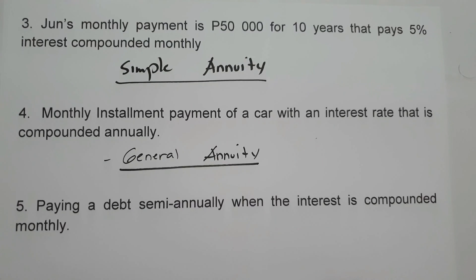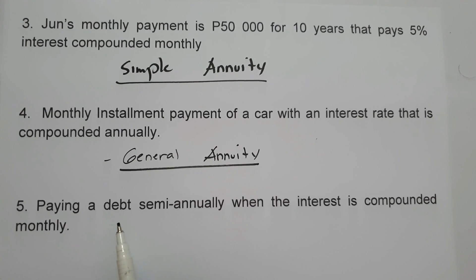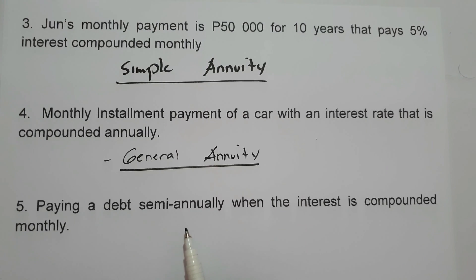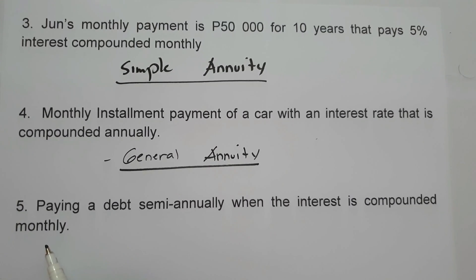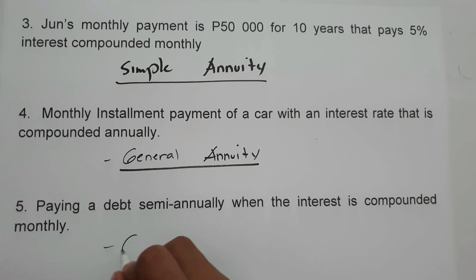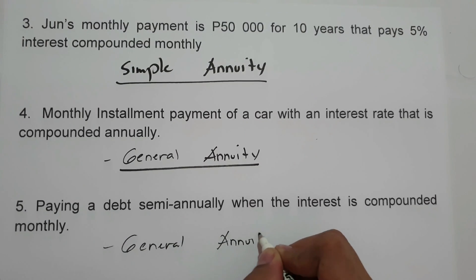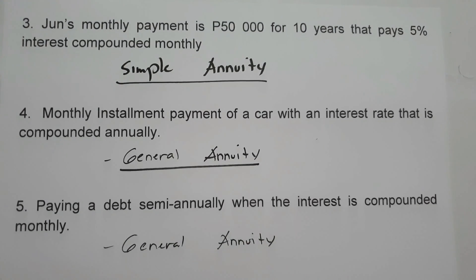On our last example, paying a debt semi-annually when the interest rate is compounded monthly. The payment interval is semi-annually, which is not equal to the compounding interval which is monthly. Therefore, the given situation represents general annuity.